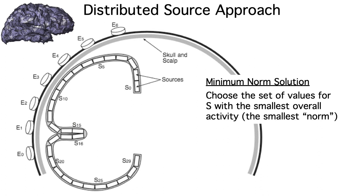The minimum norm approach solves the inverse problem by choosing a set of values at each source that minimizes the overall level of activity across the vector of sources, S. We quantify the overall level of activity by taking the norm of S, and we choose the solution with the smallest norm, that is, the minimum norm solution.